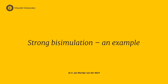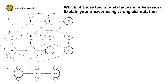In this clip I want to show, using an example, how to use bisimulation to compare the behavior between two models. We have here two models, L1 and L2. As a first step I inspect the models. What I notice is that in L1 we have two S's, a T and a choice between A and B. And in L2 we have S's and T's, a choice between A and B, and then some more S's and T's.